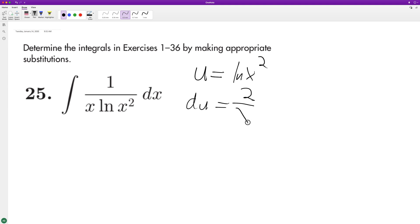because you pull down the 2 over x dx. So to get du equal to dx, we need to multiply du by one-half. So we get one-half integral of u raised to the